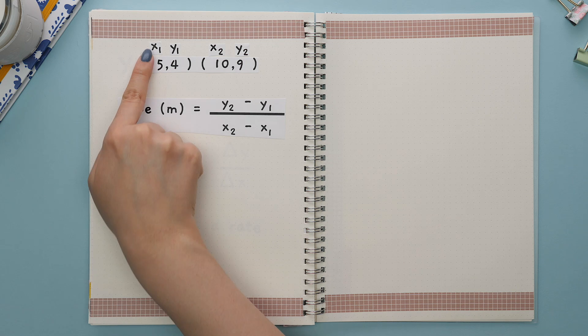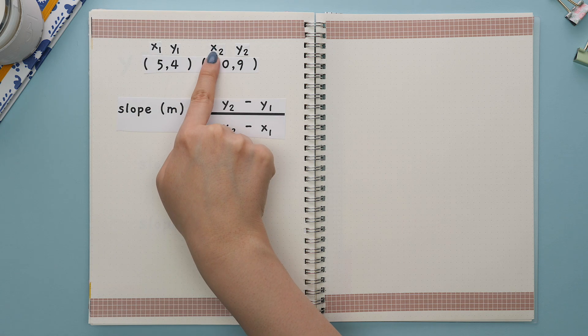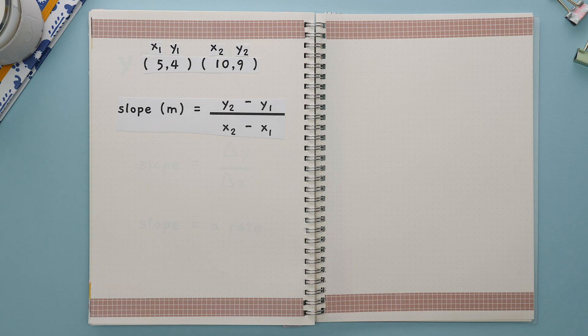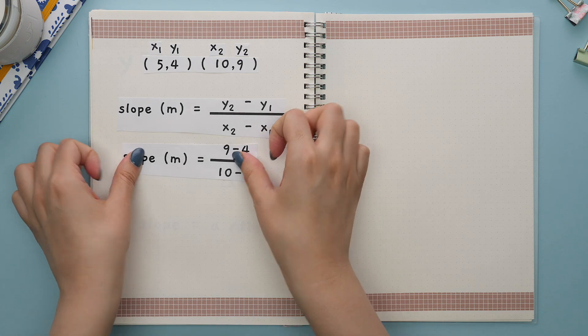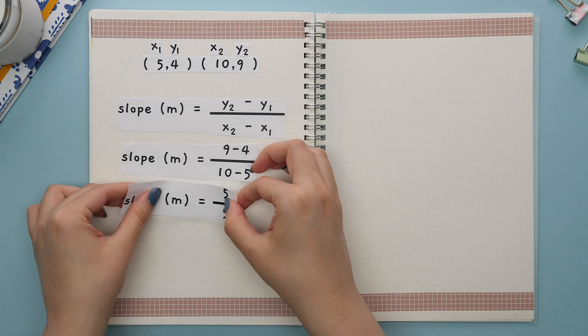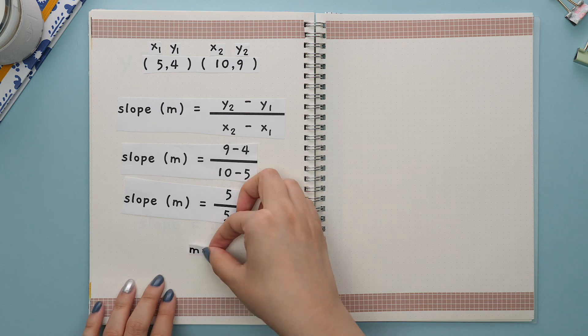Start with labeling your two points. The first point is x1 and y1. The second point is x2 and y2. We can plug in our labeled values into the formula and subtract first, then divide to get our slope.